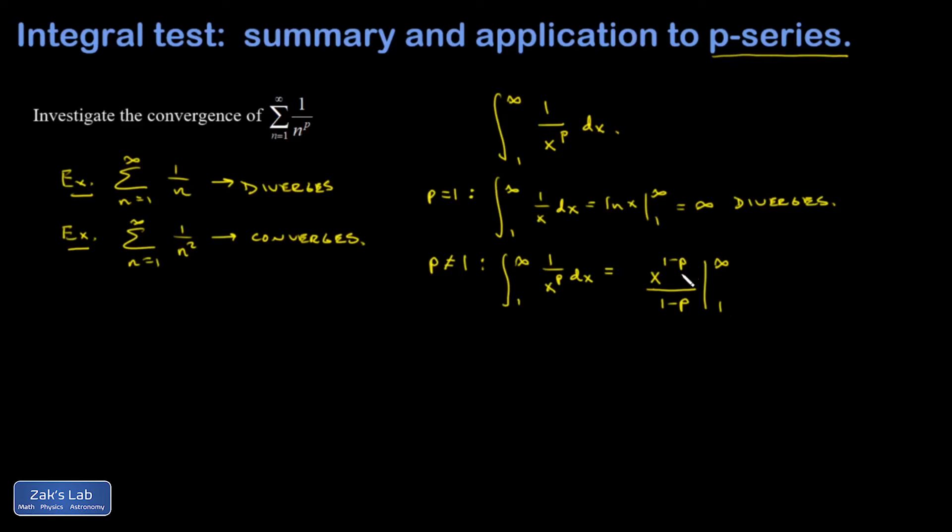So when is this thing going to converge? Well, what I require is that x has some kind of negative exponent so that when I plug in a large number for x, I'm going to get a small result. In other words, a 0. So this converges if 1 minus p is negative. In other words, 1 is less than p. In other words, p is greater than 1.